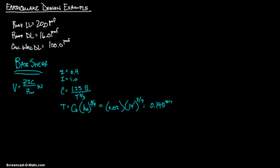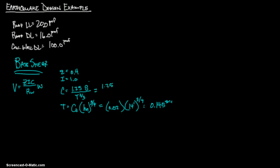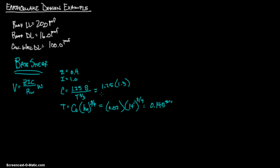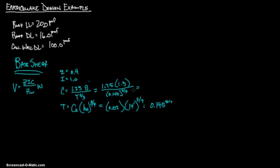We also need S. You can get S from Table 16-J, provided on page 83 of the study guide. Since we don't know anything about the soils, we assume S equals 1.5. So C equals 1.25 times 1.5 divided by 0.145 to the 2/3, and I get C equals 6.79.